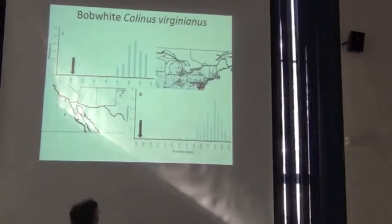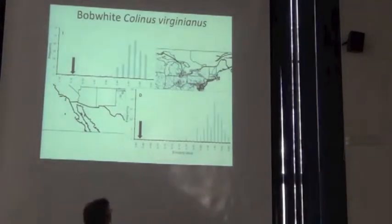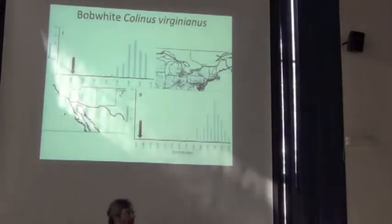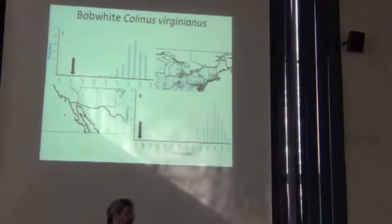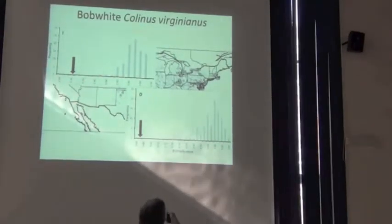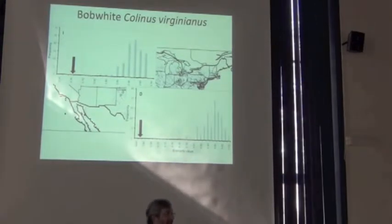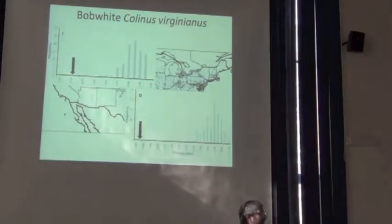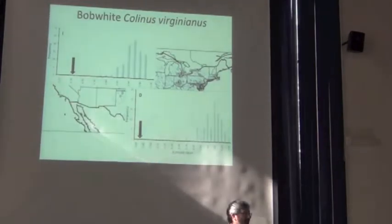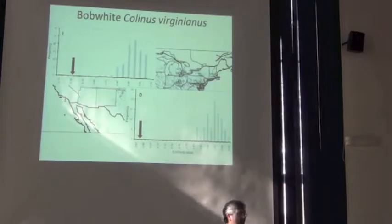And these are two different metrics of niche identity. And in both cases, you see that the arrow, the observer, is to the left of the null distribution, and so they are less similar than you would expect by chance. And so once again, these two sets of points sampled from the same species are not identical to all of them.